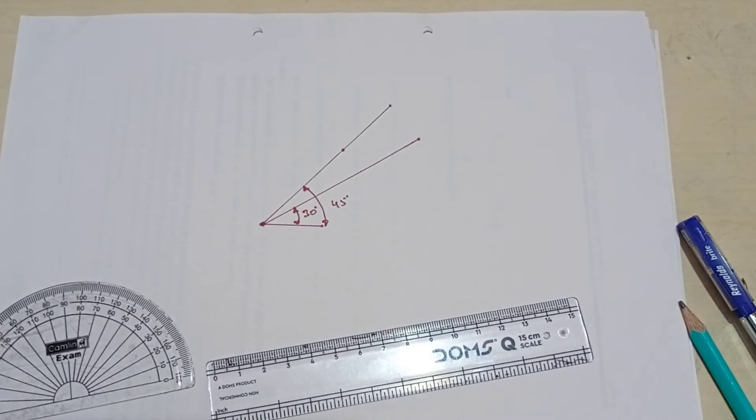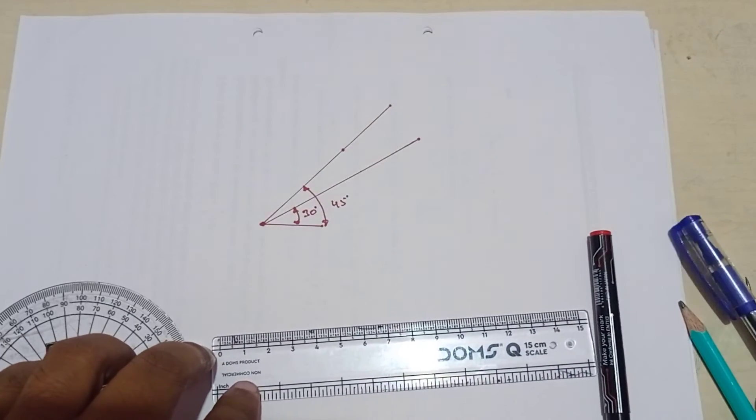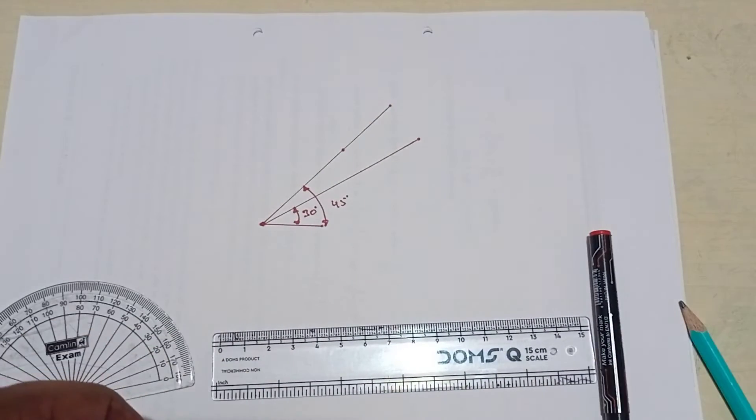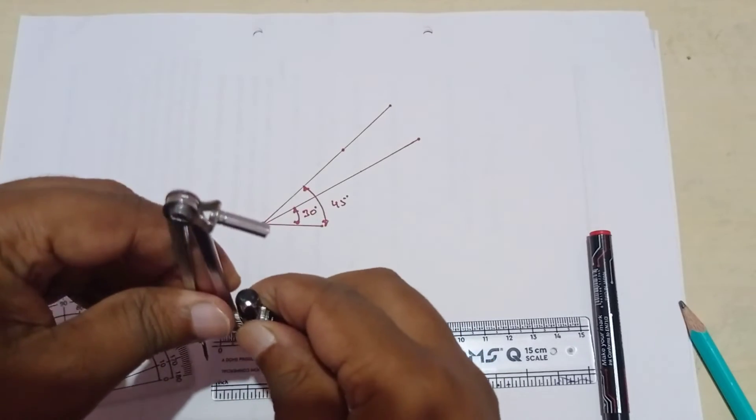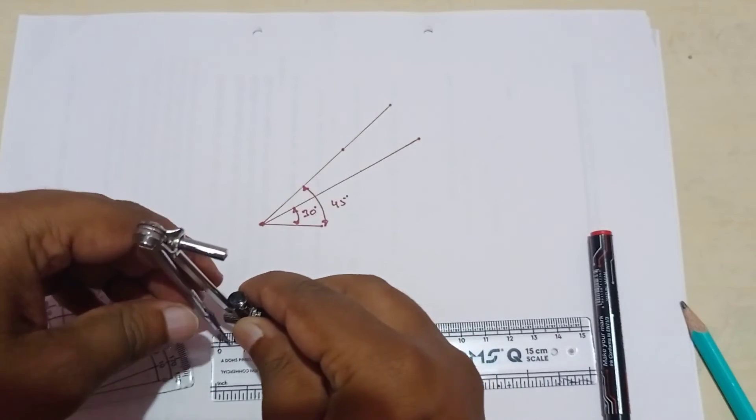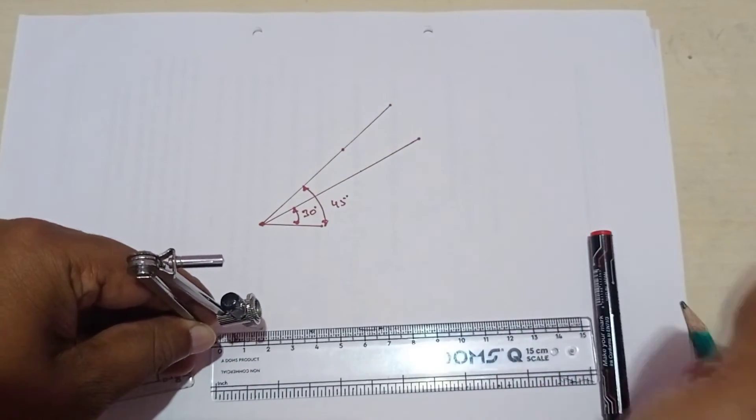Say I want to measure a dimension of, say, 2.7 millimeters. I'll measure this in the actual scale using compass. 2.7, this is the actual scale dimension, 2.7, which I have measured.